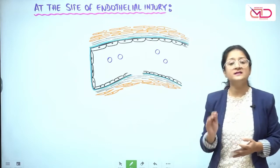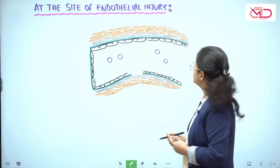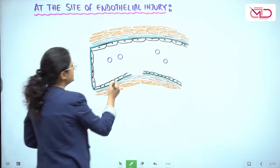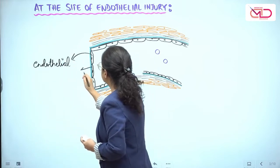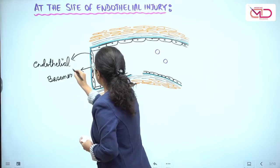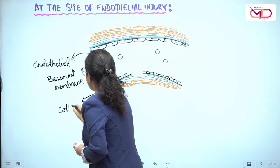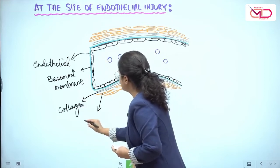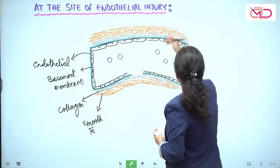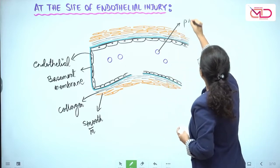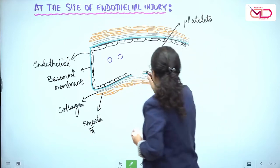Now let's talk about what happens at the site of endothelial injury. Here is a diagrammatic representation of a blood vessel where vascular injury has happened, so the endothelial lining is disrupted. The endothelial lining is shown here; the blue color represents the basement membrane of the endothelial lining. Underneath the basement membrane we have the connective tissue and collagen layer, and underneath that the smooth muscle layer. The cells shown in the blood circulation are platelets.